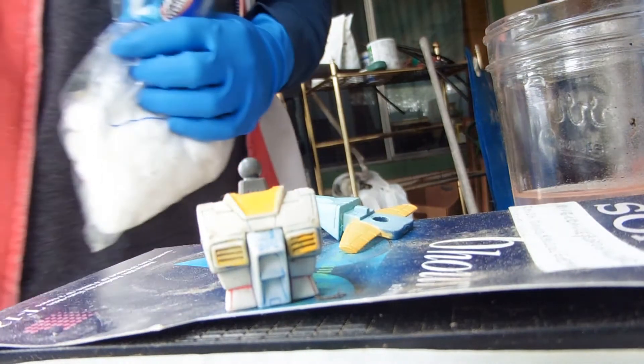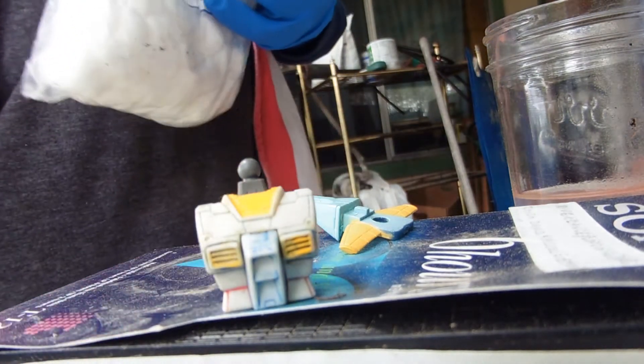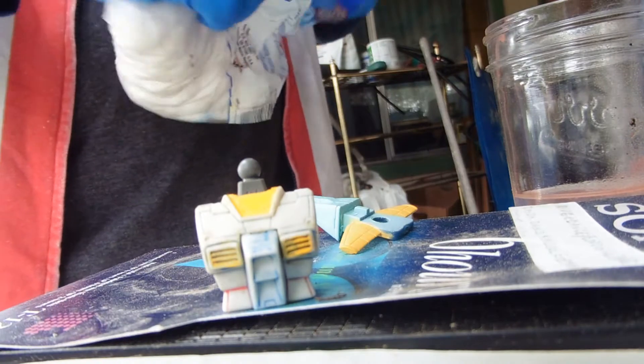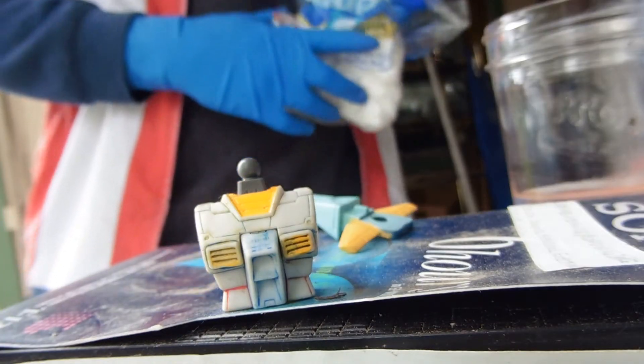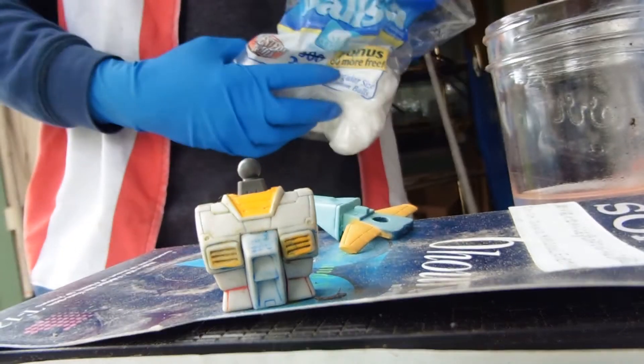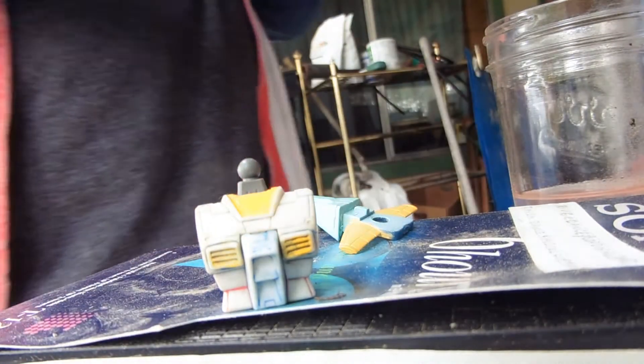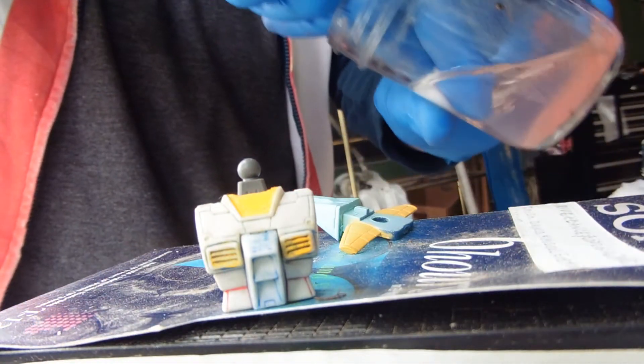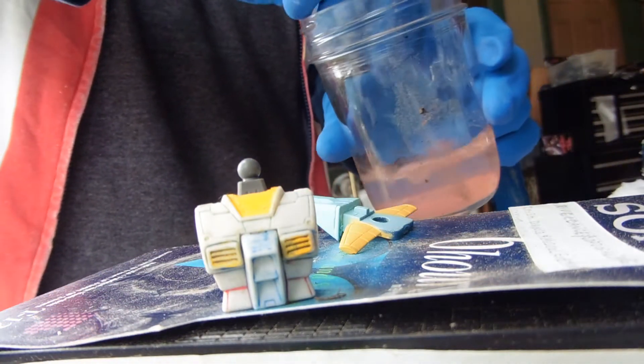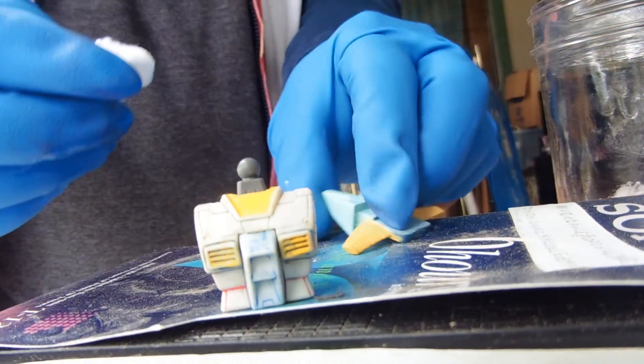There's two types of things you want to use for this. Q-tips for the details and not getting certain parts, which you can also put a layer of something, like wall-mounting putty, over a part that you want to leave the color on. But cotton balls work pretty well, too. I actually like these cotton balls, because they're so small. Makes them kind of hard to hang on to.